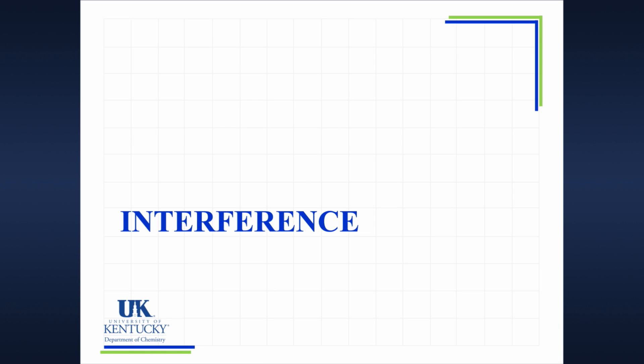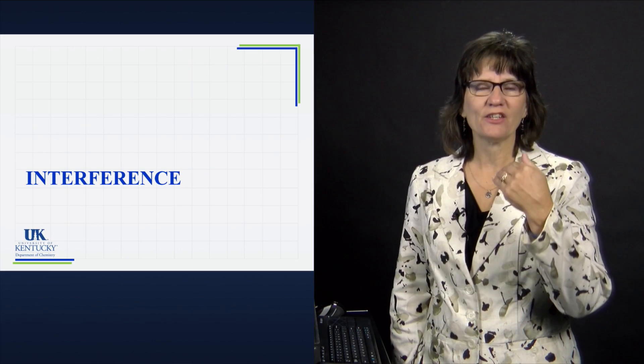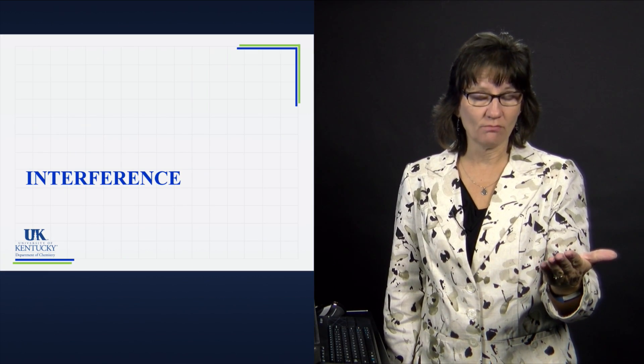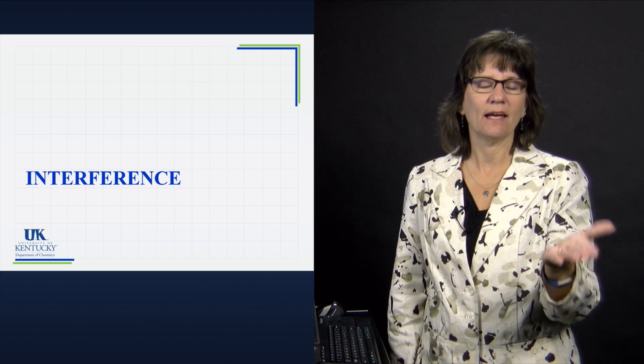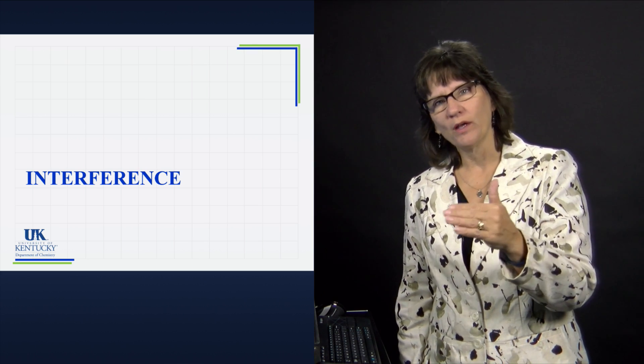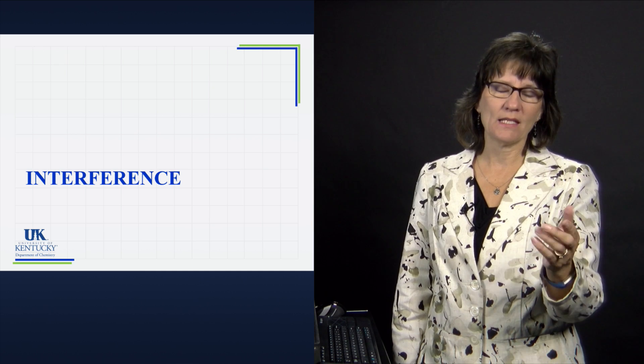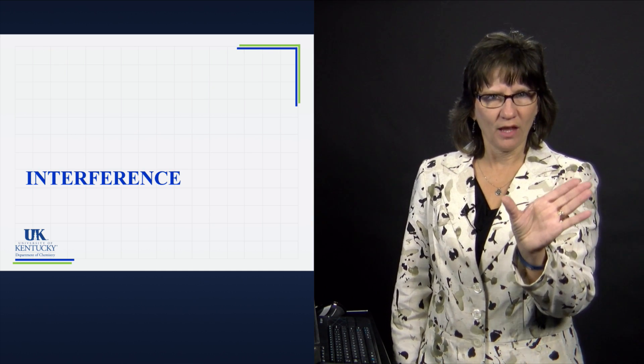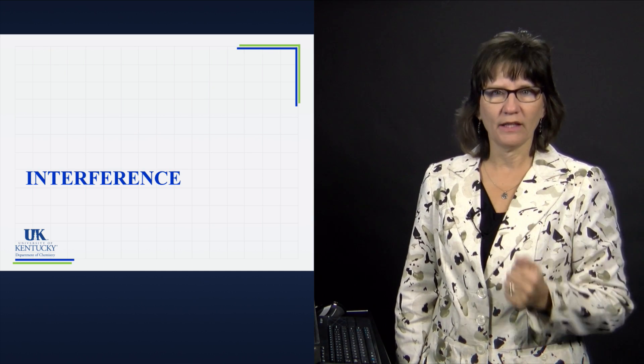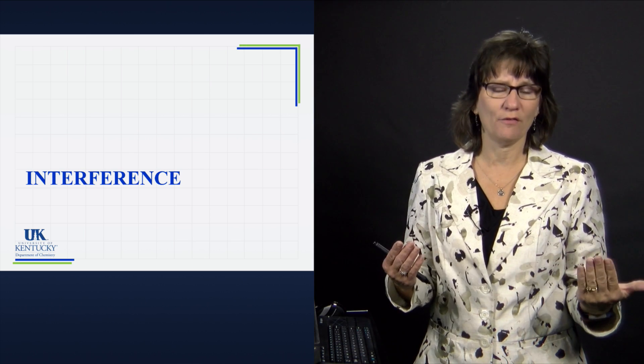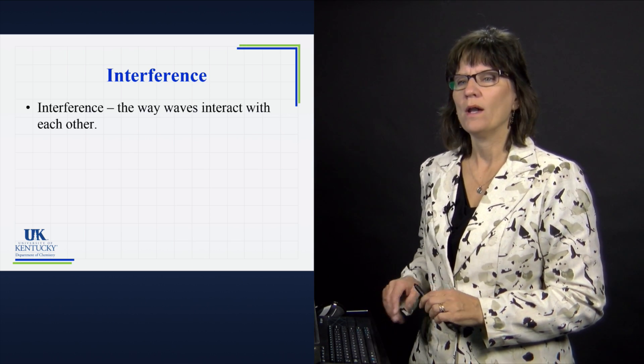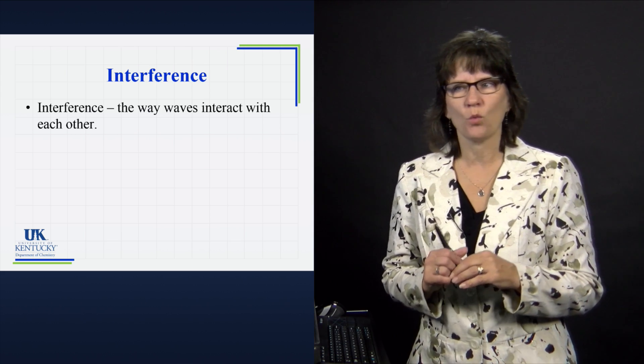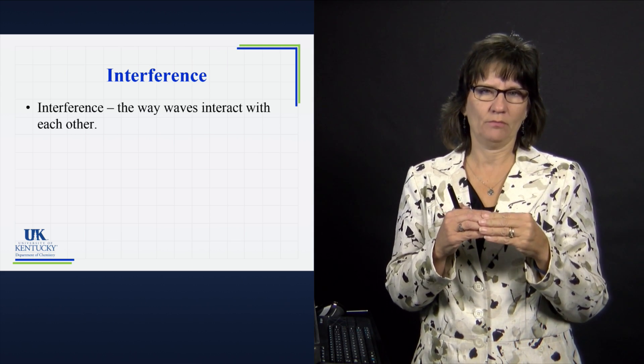Now that we've taken the idea of a wave and we've applied it to electromagnetic radiation, we can talk about the speed of light and utilize that in a problem, and convert between wavelength and frequency for light. Now we're going to look at a property of light that is called interference. This is really a property of any wave, but we're looking at it for light itself. What is interference? Interference is the way waves interact with each other.